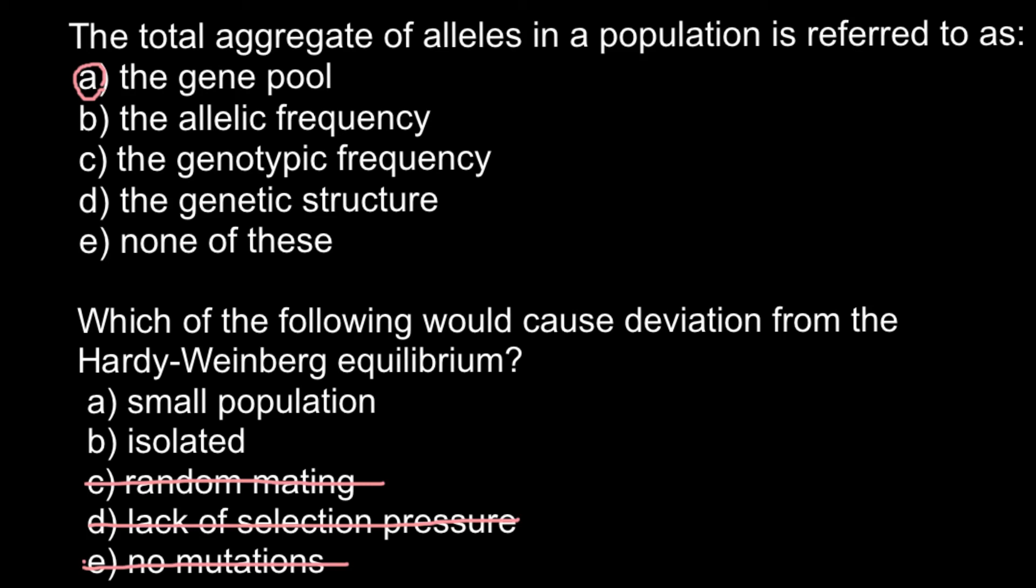So we have to exclude small population because in small populations there can be genetic drift. The size doesn't tell us that there is no migration.